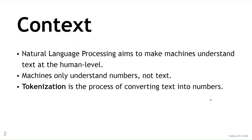Just a little bit of context: natural language processing is a subfield of machine learning, which is a subfield of artificial intelligence, and it aims to make machines understand text at the human level. But there's a problem — machines only understand numbers, not text. So we need a process to convert text into numbers so machines can understand and process them. They can use these numbers to predict sentiment or generate text, as in language models. And this process of converting text into numbers is known as tokenization.